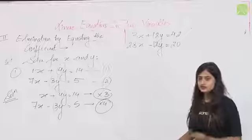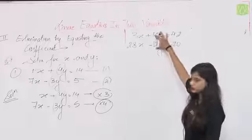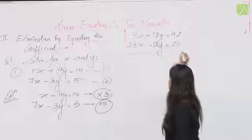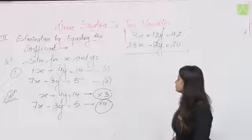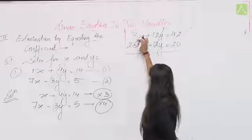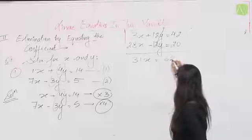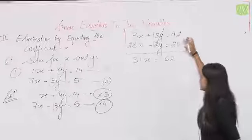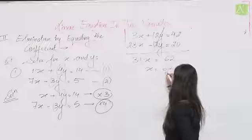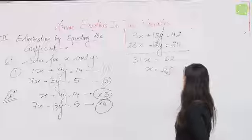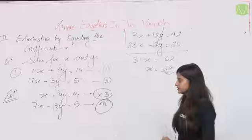अब इन दोनों equations को add करते हैं — 12y और −12y cancel हो जाएंगे: (3x + 28x) = 42 + 20, so 31x = 62, so x = 62/31 = 2। यह method comparatively easy है।